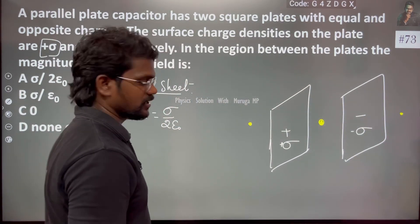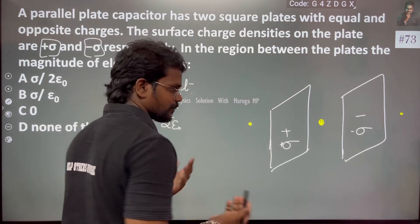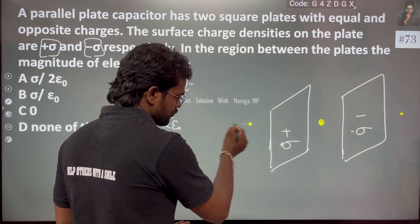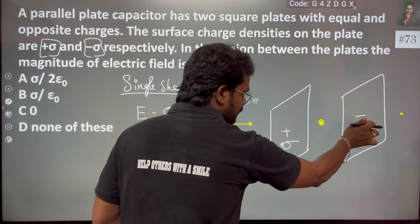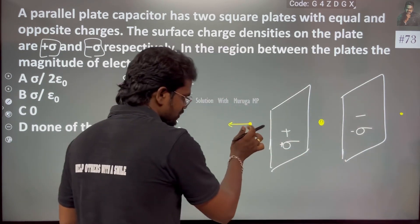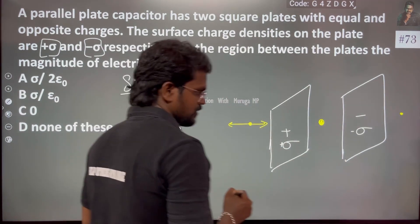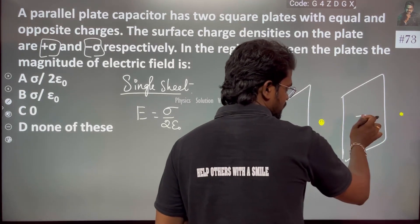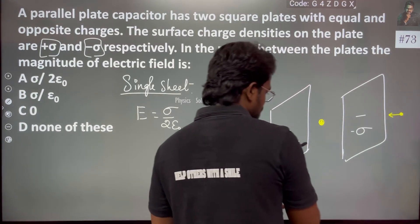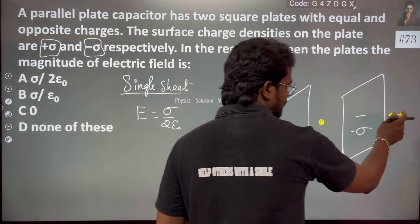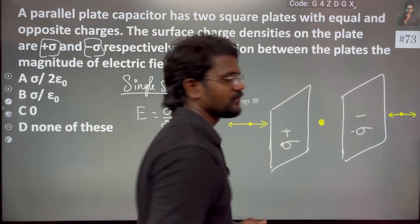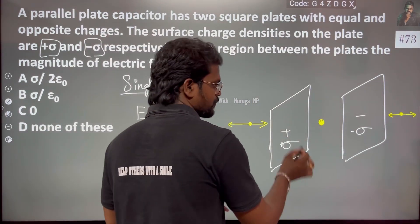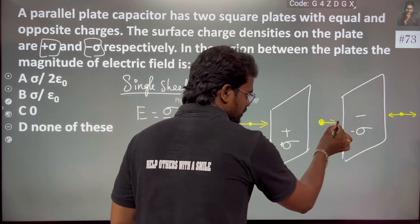Let us say this is a point charge — a positive charge. This is the positive plate and this is negative. The positive plate will repel the positive charge, and the negative plate will attract it. Moving to the other side: positive plate and negative plate — they attract. In the middle, positive and positive will repel.